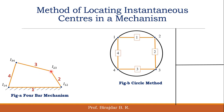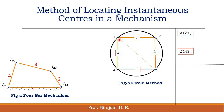For the 4-bar mechanism, total 6 instantaneous centers exist; we've located 4: 1-2, 2-3, 3-4, and 1-4, already marked on the circle, forming a rectangle. Now we join diagonal 1-3, which divides the rectangle into two triangles: triangle 1-2-3 and triangle 1-3-4. Considering triangle 1-2-3, we already located instantaneous centers 1-2, 2-3, and the side 1-3 represents instantaneous center 1-3, giving three instantaneous centers from this triangle.